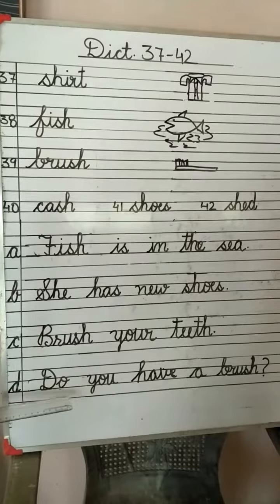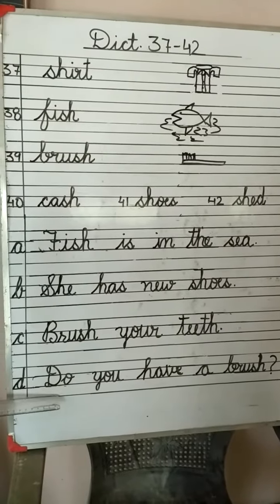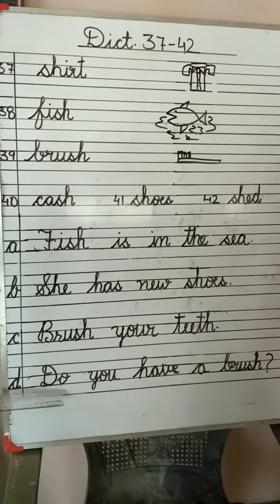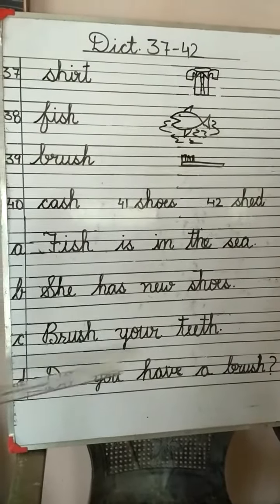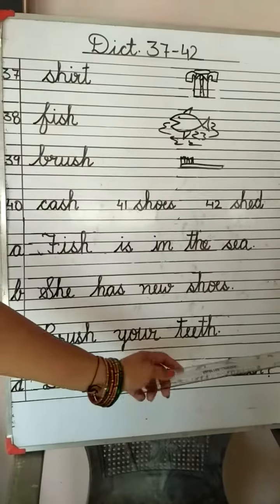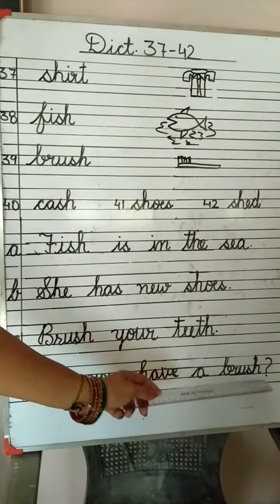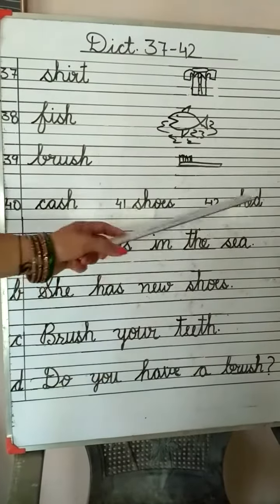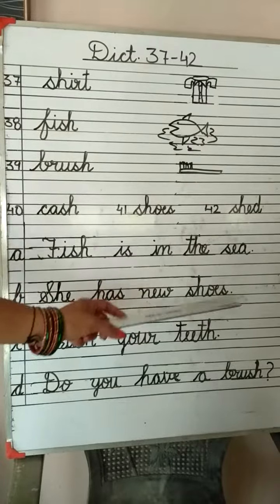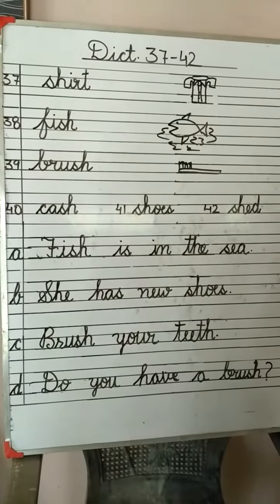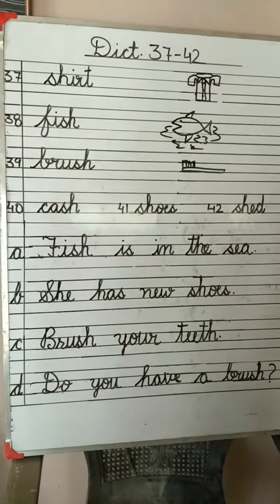And as I always told you, jo 'do' ke saath sentence shuru hota hai, it is a question sentence. Woh question hai, to last mein we will put a question mark. Otherwise in all sentences we put a full stop. So keep on revising these sentences.